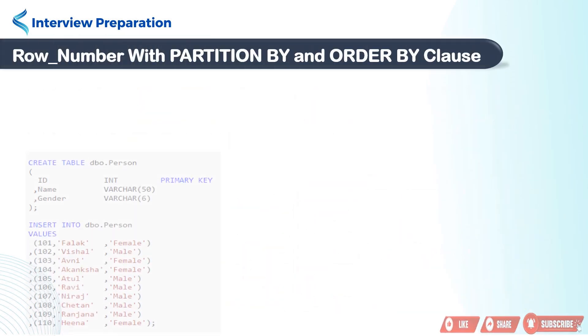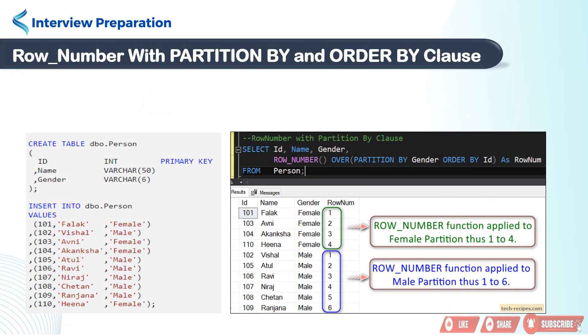Here, ROW_NUMBER function used along with PARTITION BY and ORDER BY clause. Now, we will use same person table. First, we will be creating two partition windows based on the gender column.